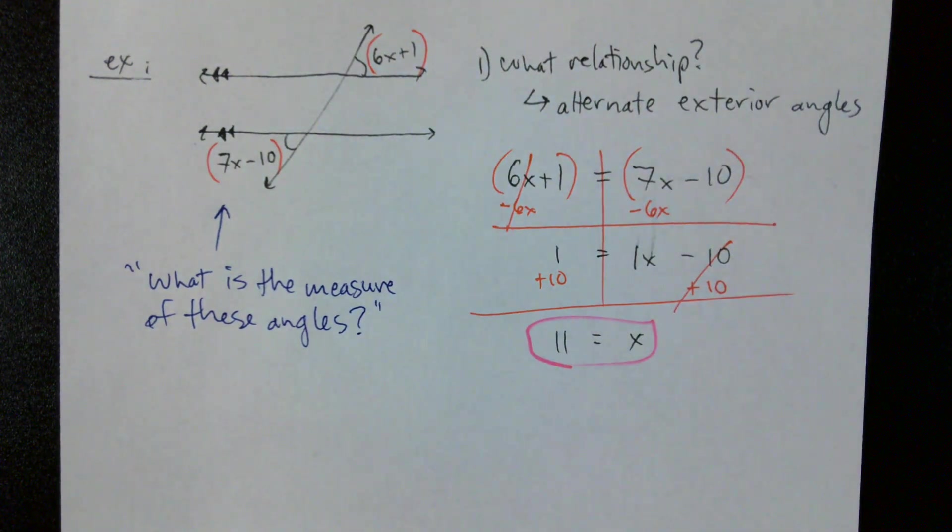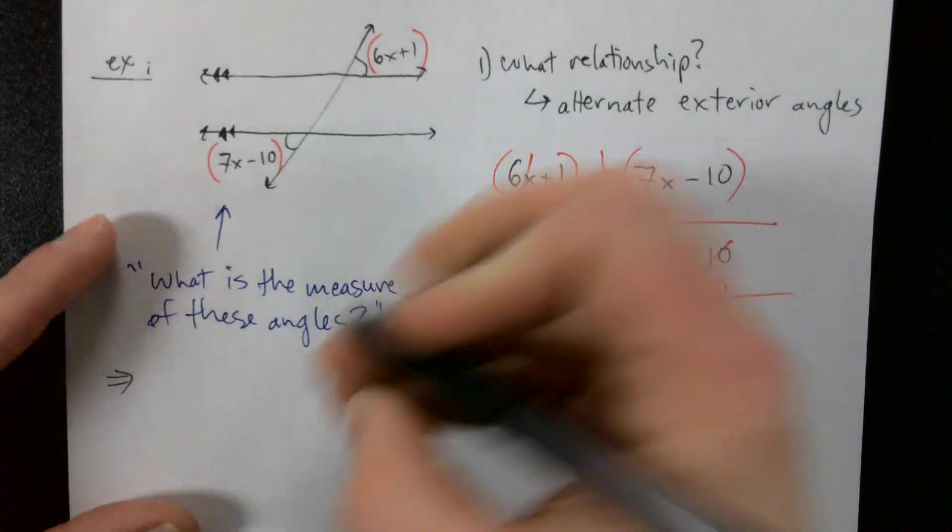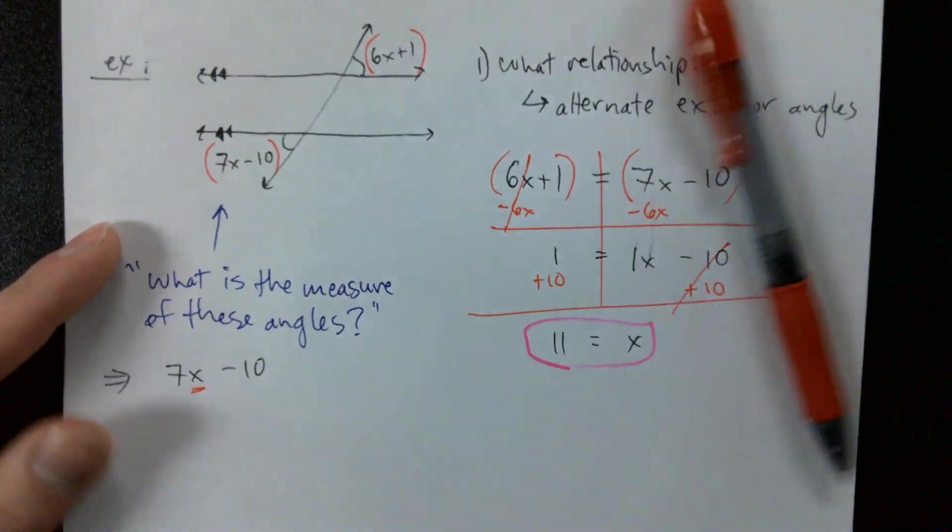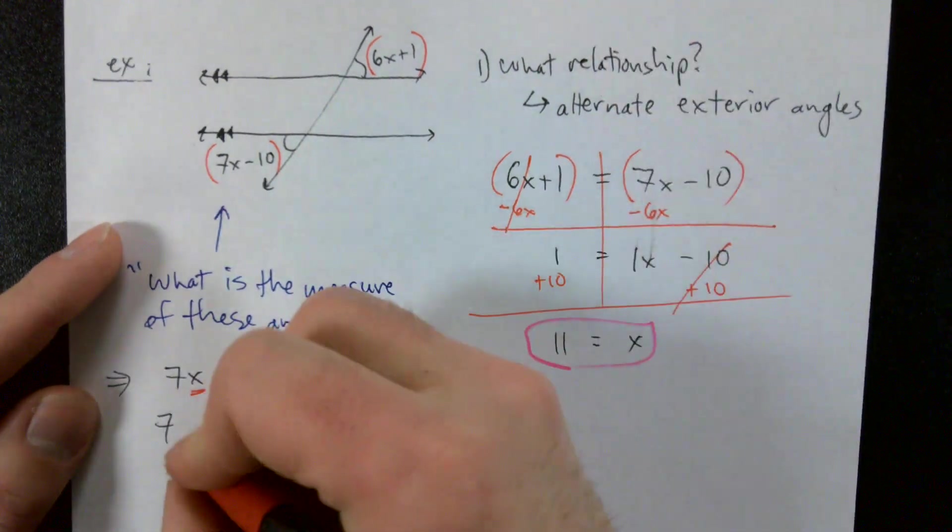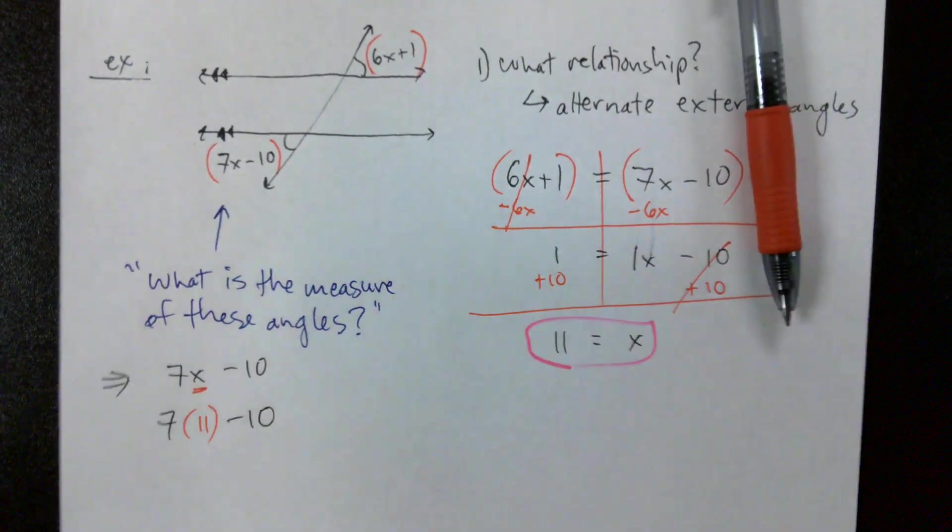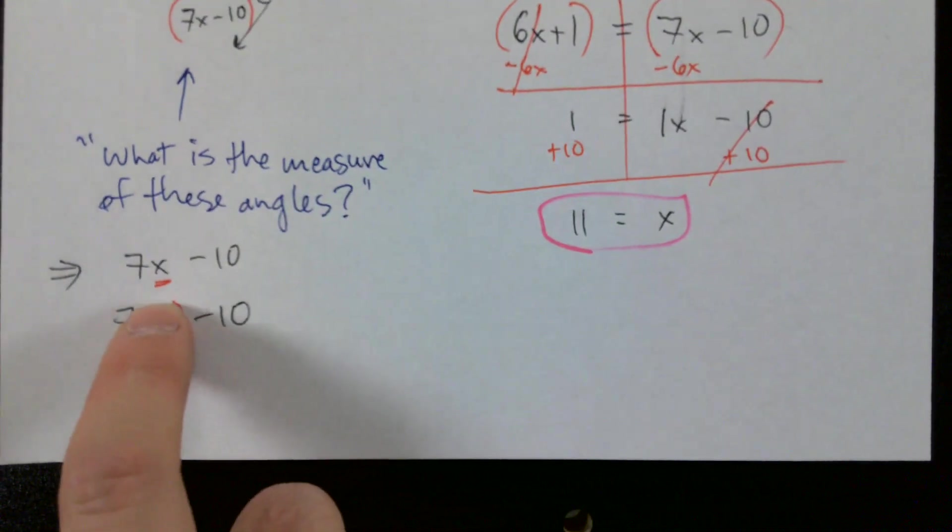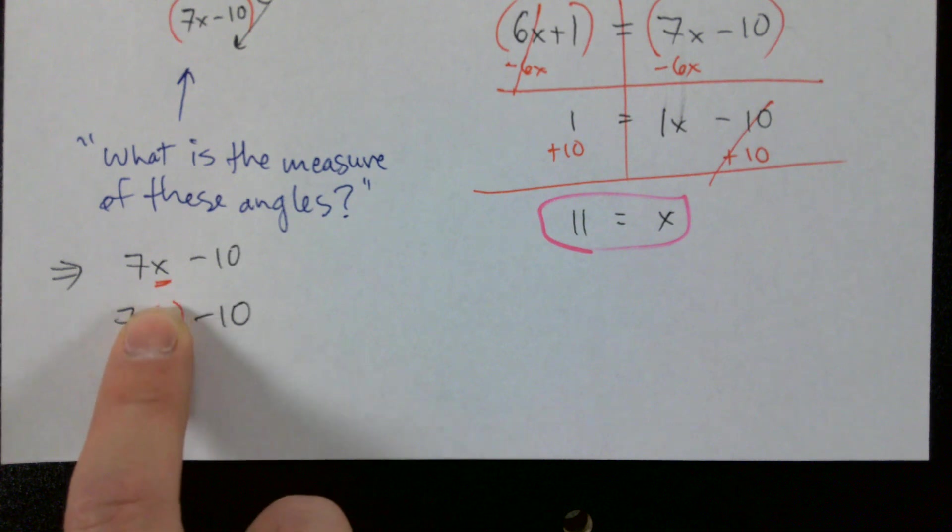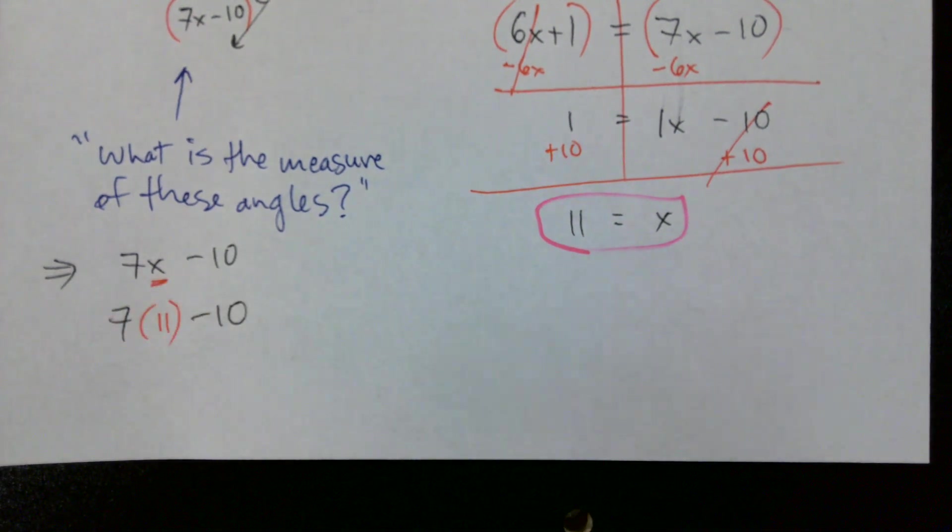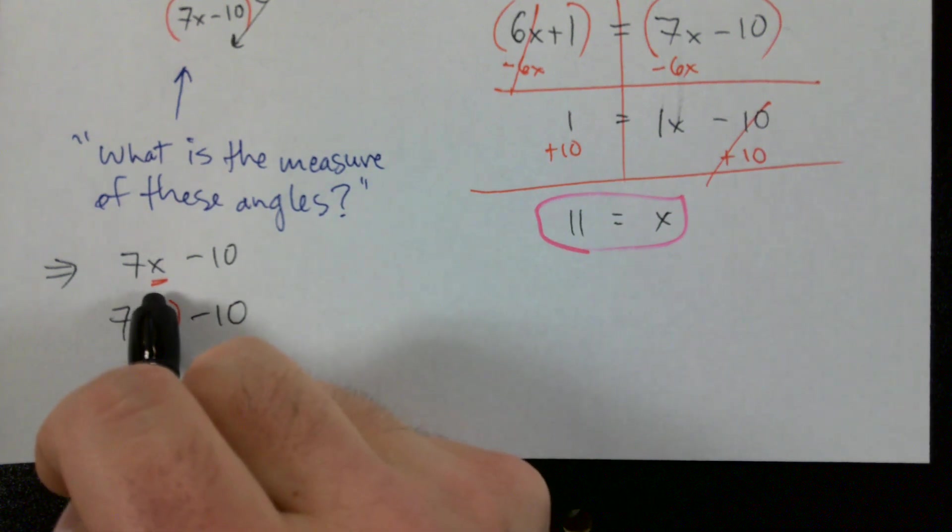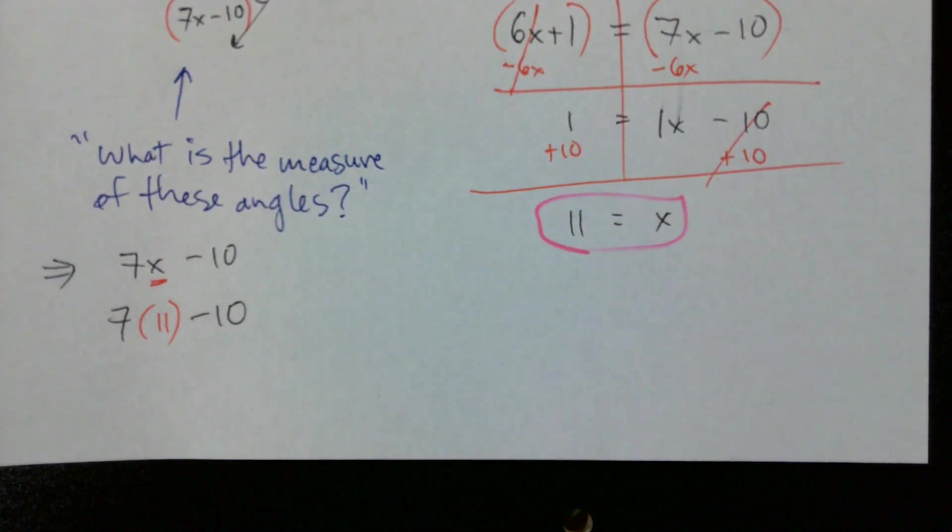We know what x is, but these angles aren't 11 degrees. We have to figure out what the actual measures of these angles are. So what we can do is we can take 7x minus 10, replace x with the x that we just found, which is 11. We just take either one of the expressions. Remember, if our angles are congruent, it doesn't matter which one we use.